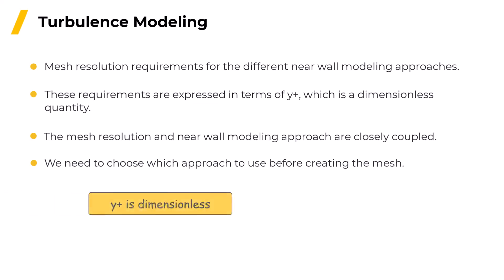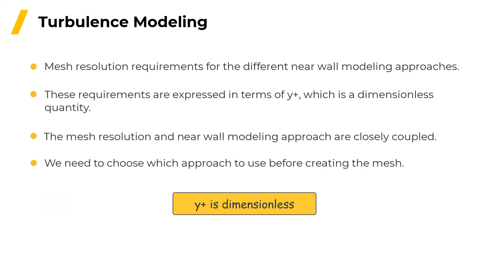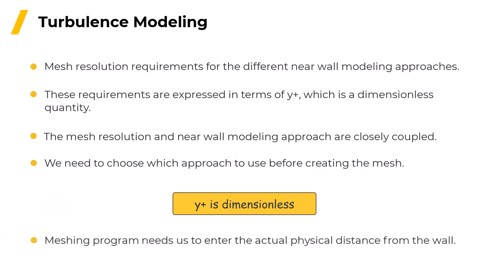Now Y-plus is dimensionless, but the meshing program needs us to enter the actual physical distance from the wall, so that means we need to be able to estimate the wall distance that corresponds to the target value of Y-plus. Let's see a quick example of how to do this.